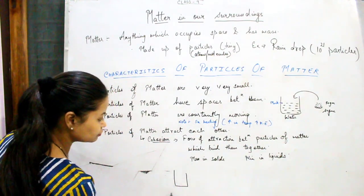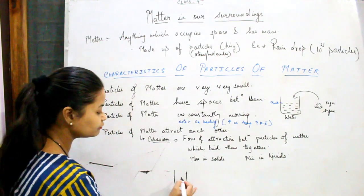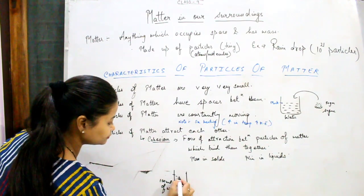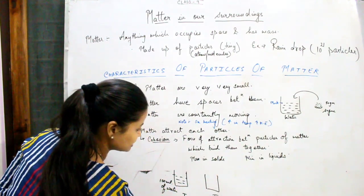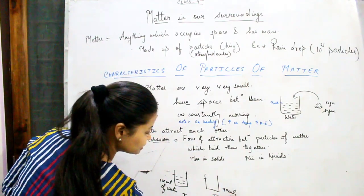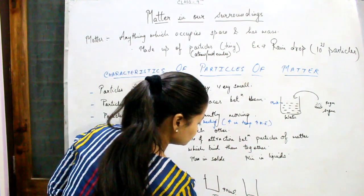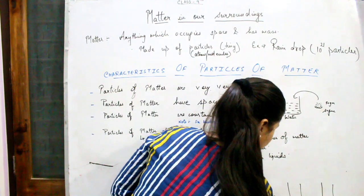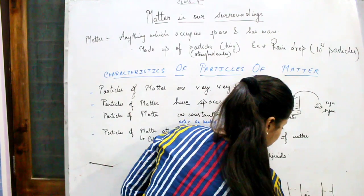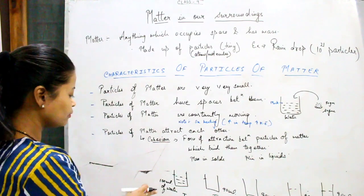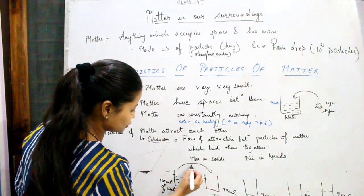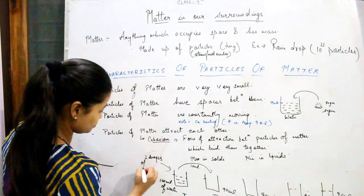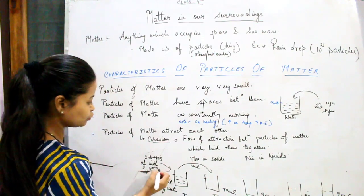We will take five beakers. The first beaker consists of 100 ml of water. The second beaker contains 90 ml of water. The third beaker also contains 90 ml of water. Similarly, the fourth and fifth beakers each contain 90 ml of water. In the first beaker, we will add two drops of ink solution.